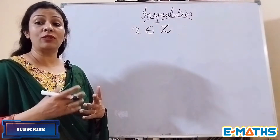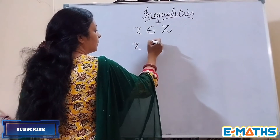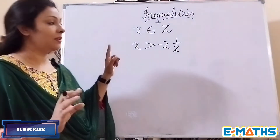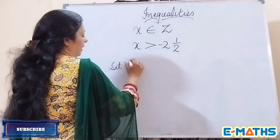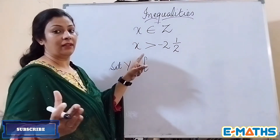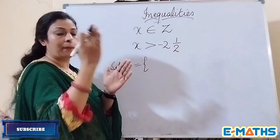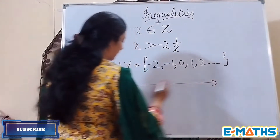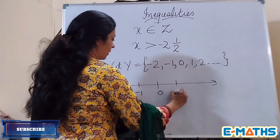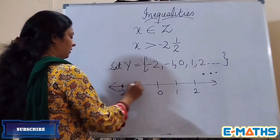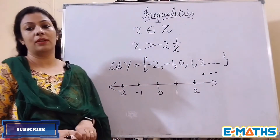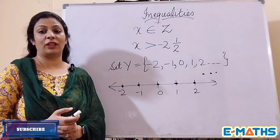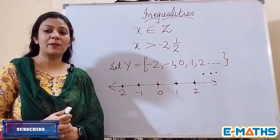Now if x is greater than minus 2 and a half, let's call it set Y. After minus 2.5, the next integer is minus 2, then minus 1, 0, 1, 2, and so on. The number line will show minus 2, minus 1, 0, 1, 2, with three dots to show it goes to infinity. That covers the key points about inequalities — thanks for watching, do subscribe, keep watching and sharing!